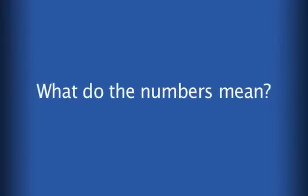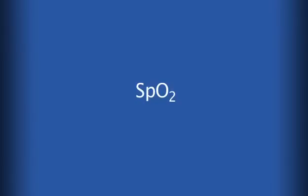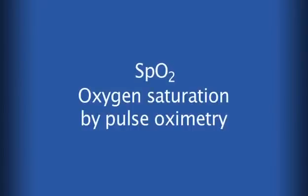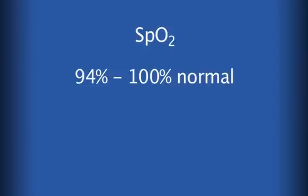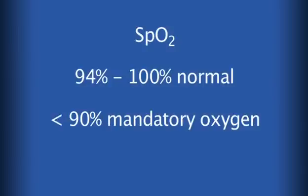What do the oxygen saturation numbers mean? When we measure oxygen levels in the blood using pulse oximetry, we get a percentage figure of the patient's haemoglobin that is oxygenated. The abbreviation used is SpO2, meaning oxygen saturation by pulse oximetry. The normal range of SpO2 at sea level is 94 to 100%. It is universally agreed that an oxygen saturation of less than 90% mandates the prescribing of oxygen.